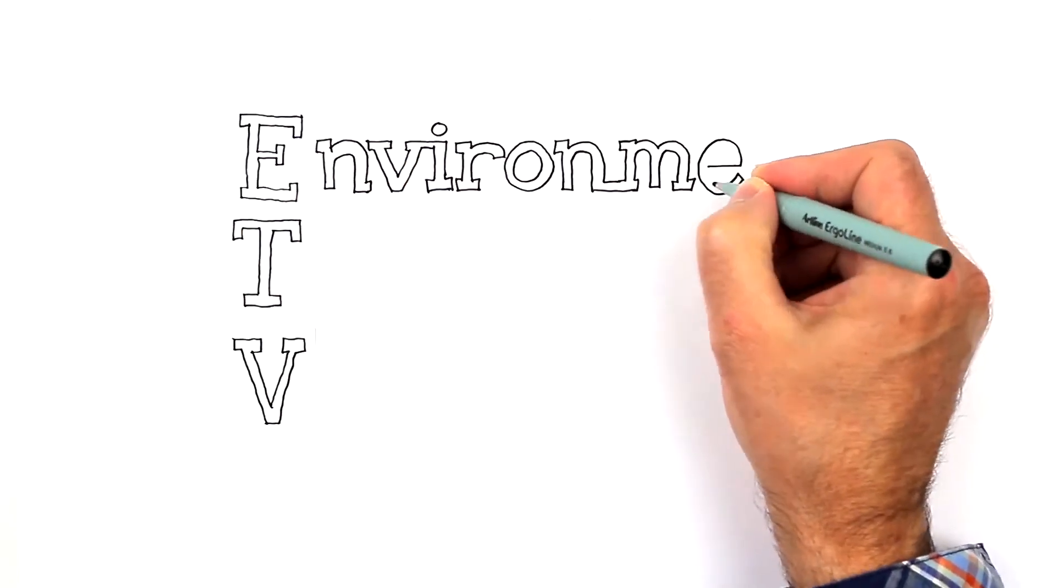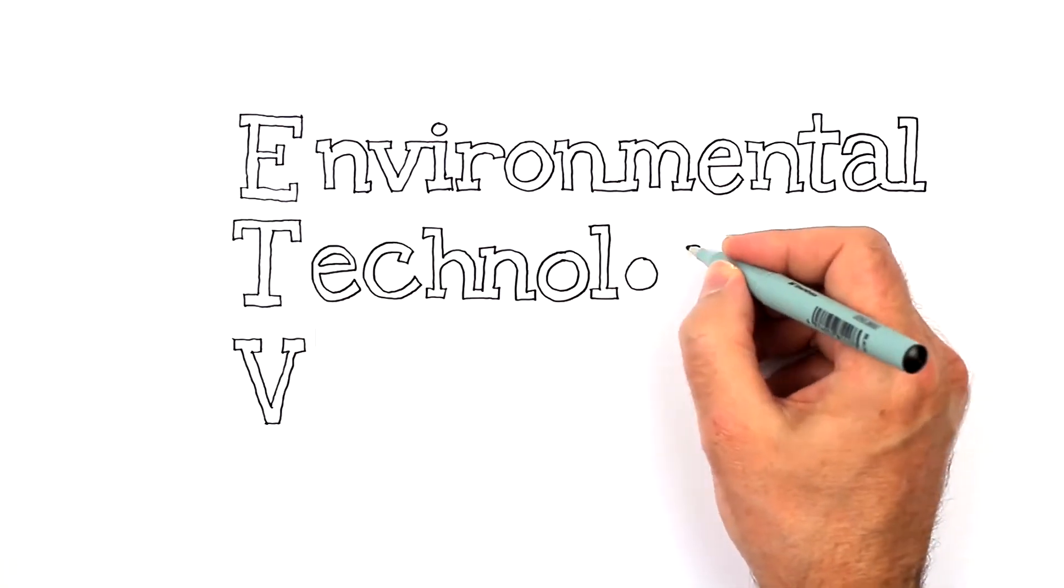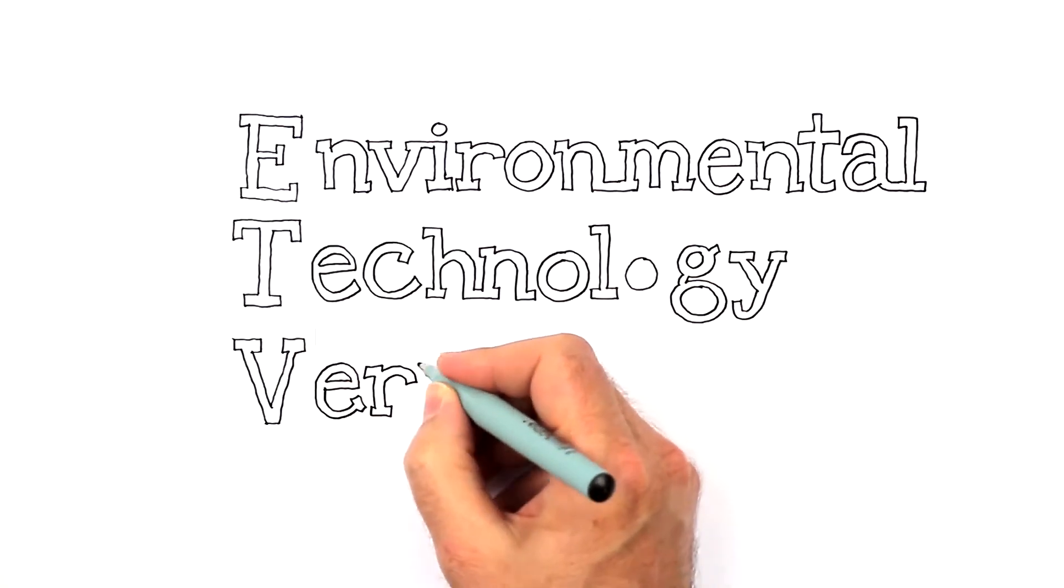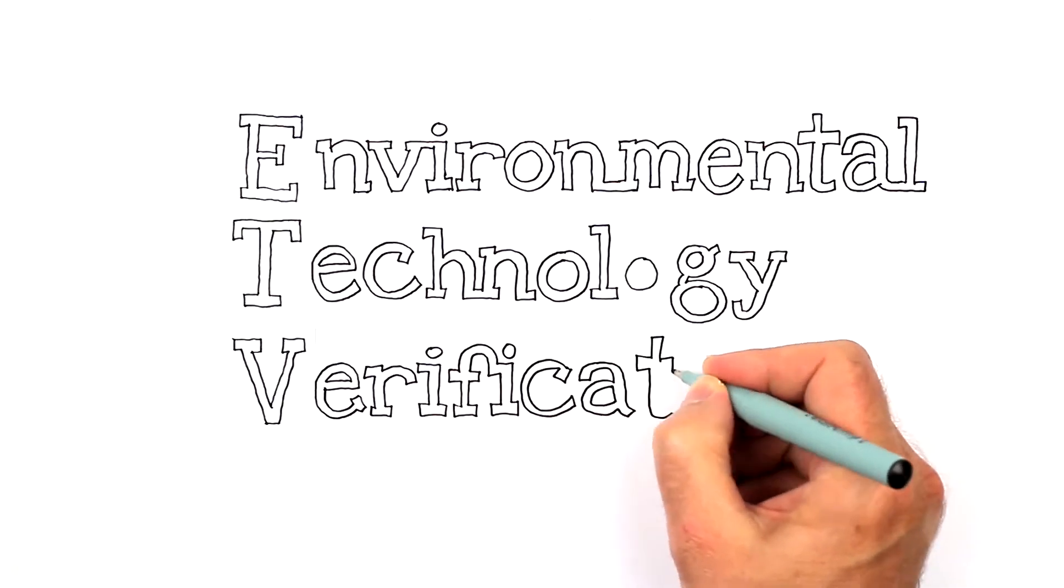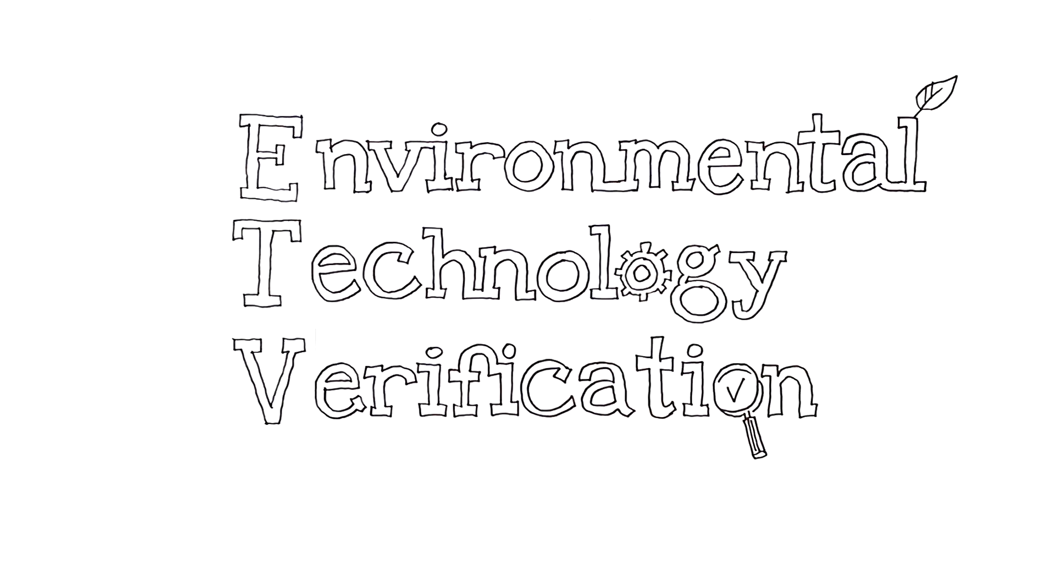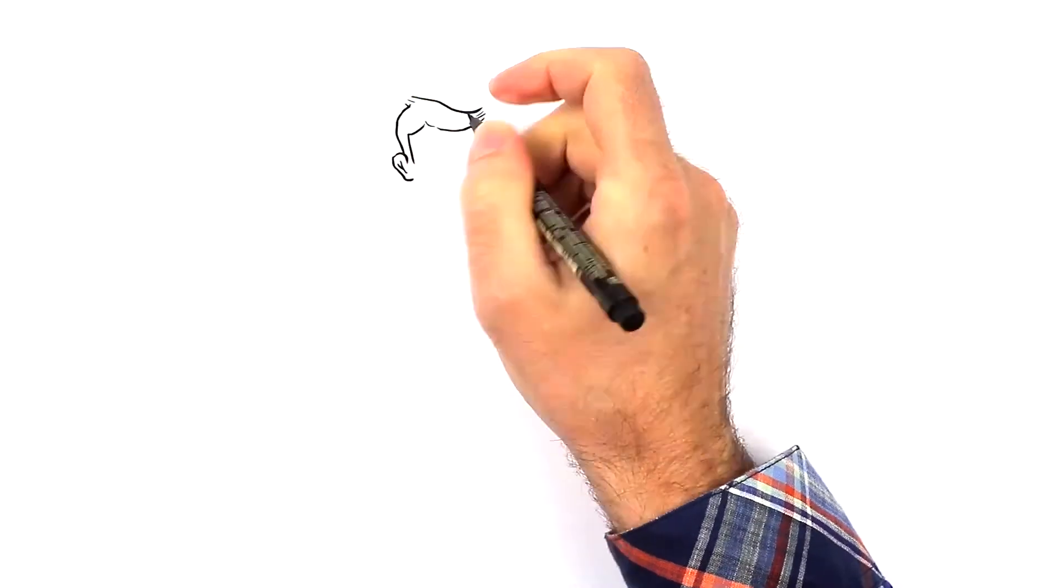What is ETV? ETV stands for Environmental Technology Verification. It is about proving and documenting the effect of innovative environmental technologies. This little film will enlighten you on the subject.